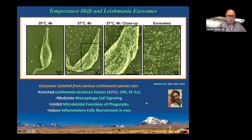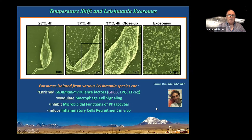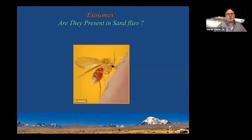When we used them in vivo to inoculate animals, they were also pro-inflammatory — able to recruit inflammatory cells, much as Leishmania does. Maybe they were mimicking what the motor cells were doing. But all of this was done in culture, which raised the question of whether this was an artifact. So we decided to look at what's happening inside the sand fly.